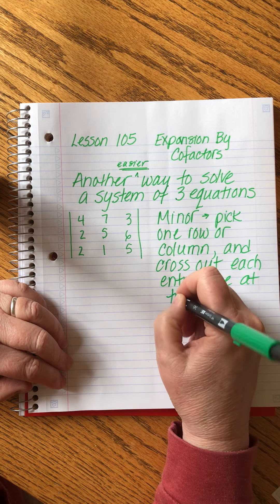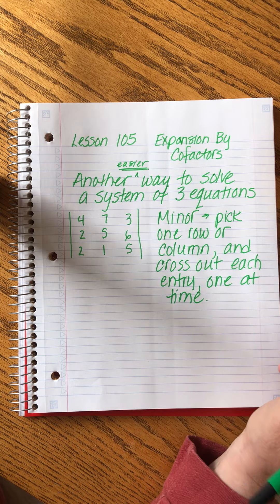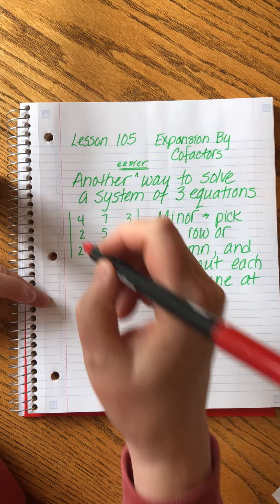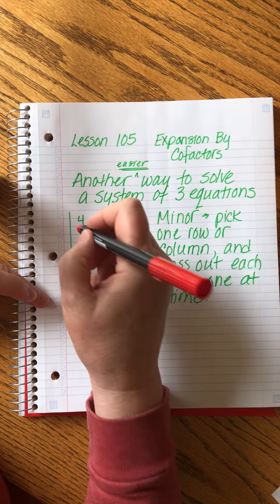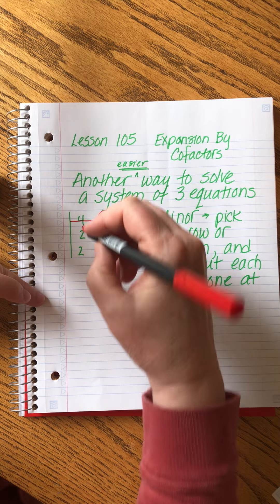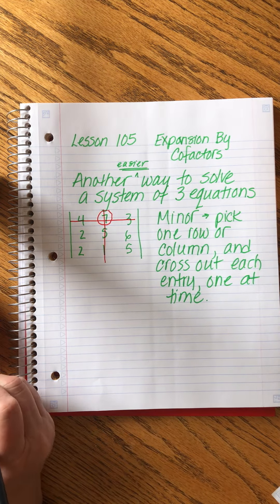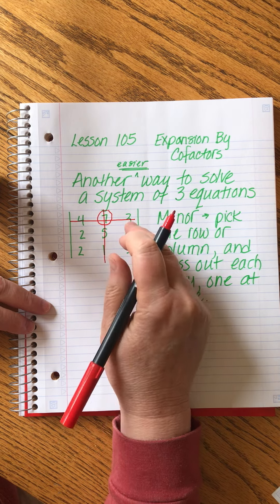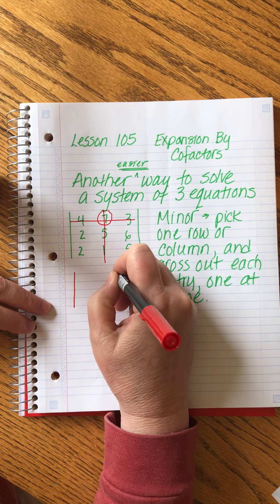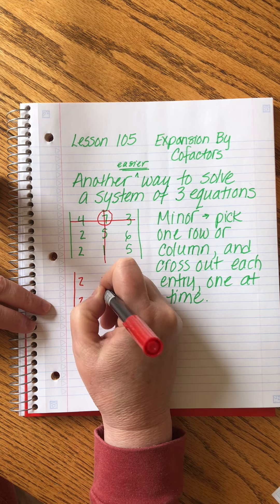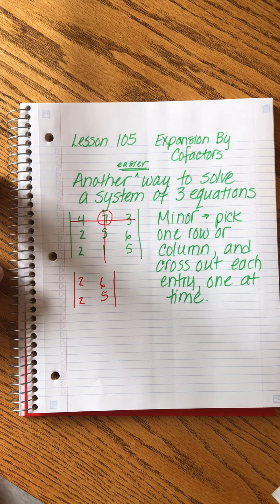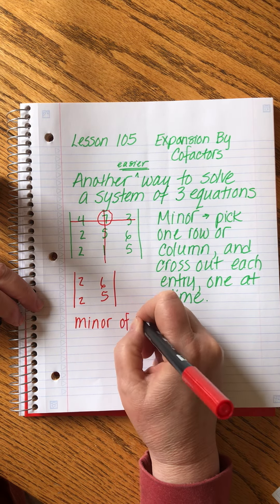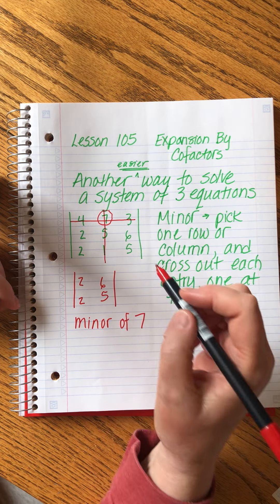This is one of those definitions that makes zero sense in words. We're going to pick one row or column and make it smaller by crossing it out one at a time. Let's pick out one element — say we want to find the minor of seven. We cross out the row with seven and the column with seven. What that does is leave us with a smaller matrix that now looks like this: 2, 2, 2, 6, 5. By crossing out the row and column that has seven in it, we've found the minor of seven in this matrix.